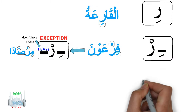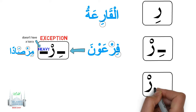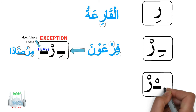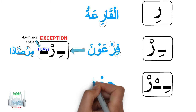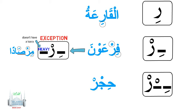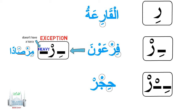If the Ra carries a sukoon as a result of stopping, and the letter before it also has a sukoon, we have to look at the letter before that letter. If it has a kasra, the Ra is pronounced light. The Ra becomes sakin because of the rules of Waqf mentioned in the previous videos. The letter before the Ra is also sakin, and the letter before that has a kasra. It reads as Hijr with a light Ra.